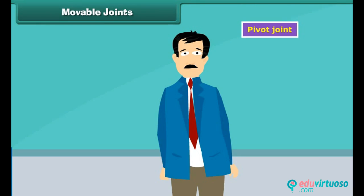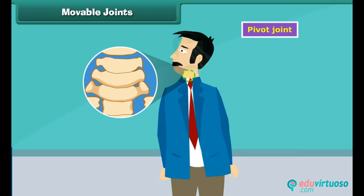Pivot joint: Our neck allows us to turn our head on both sides. Have you ever thought about what makes this possible? This is possible because of the pivot joint.